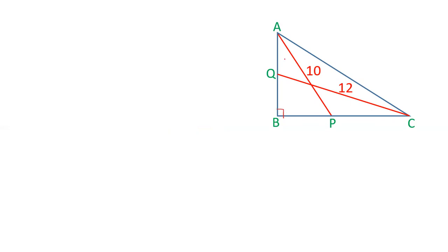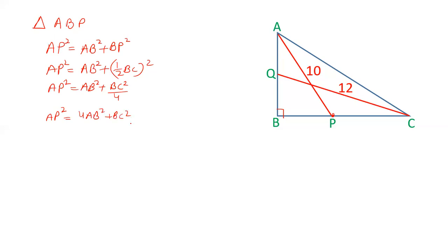This angle is 90 degrees. We will take right angle triangle ABP first. In right angle triangle ABP, AP square equals AB square plus BP square. As P is the midpoint of BC, BP equals half of BC. So AB square plus half of BC squared equals AP square. Calculating the square, we get BC square by 4. So the value of AP square is 4AB square plus BC square upon 4.